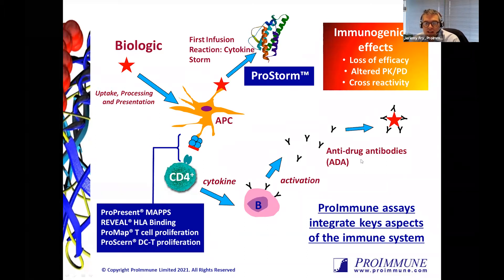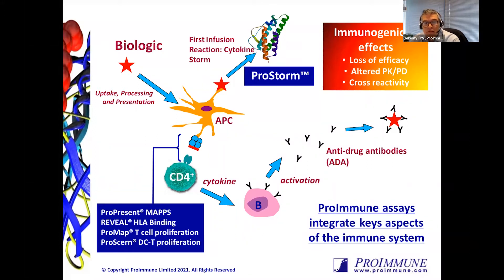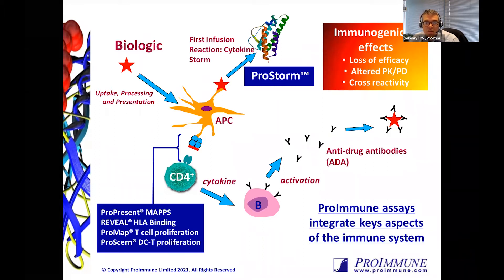Generating anti-drug antibodies is not always a problem — it is, of course, if they're neutralizing or can affect the potency of that molecule. But there are other concerns as well, such as these antibodies could alter the PKPD of the drug, reduce efficacy, and can actually lead to very serious consequences of cross-reactivity against potential endogenous proteins. That can be catastrophic in certain circumstances and has indeed happened. So safety is a main concern in regards to immunogenicity, and of course you also want a drug that performs appropriately and is effective.